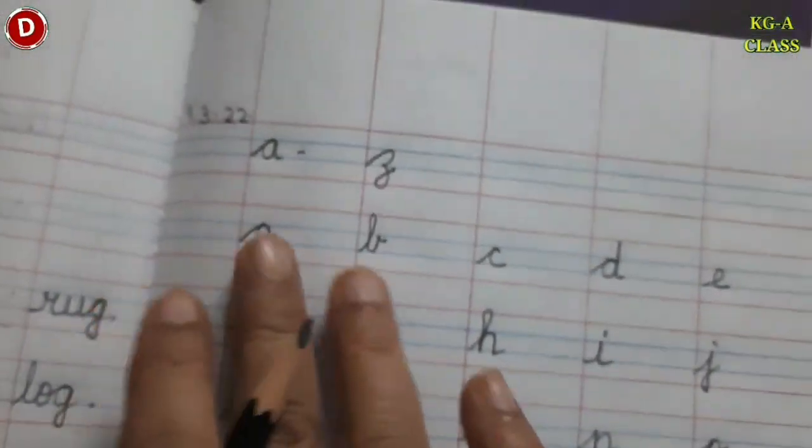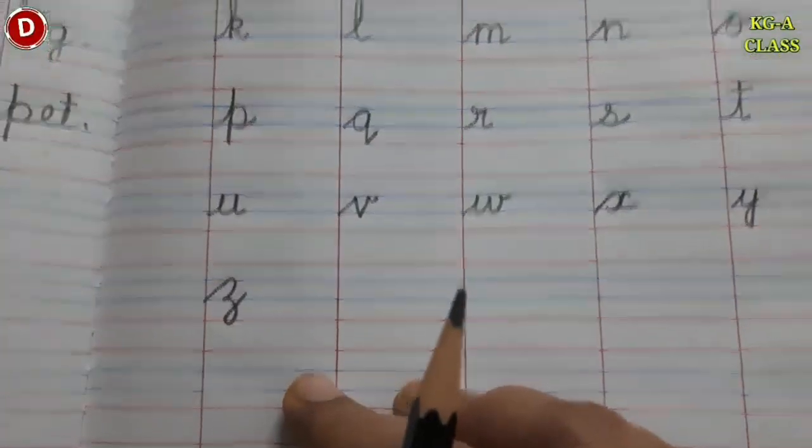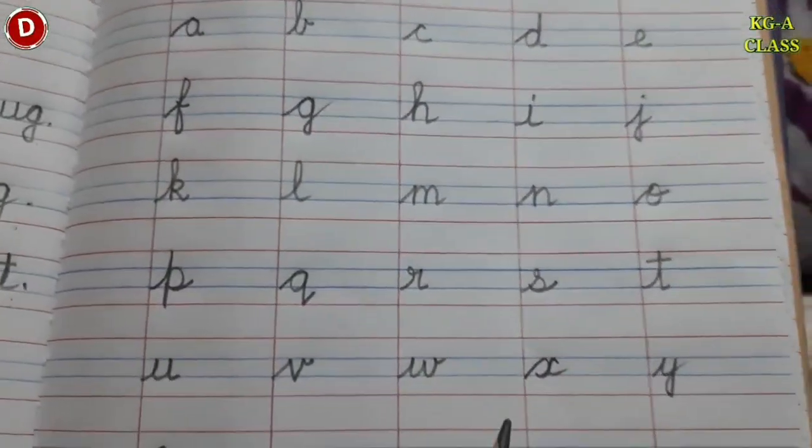In this way, you have to write cursive A to Z in your English notebook and then you have to send this picture to me.